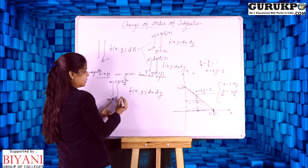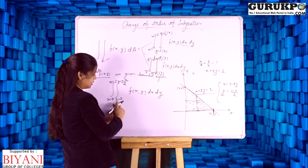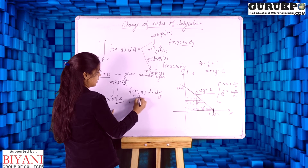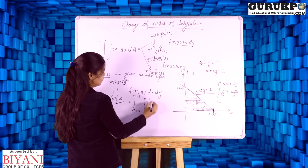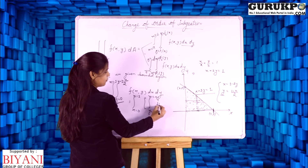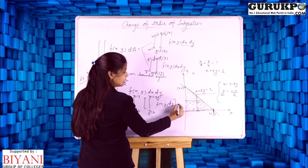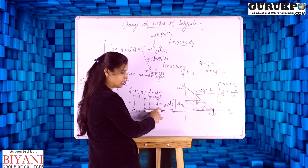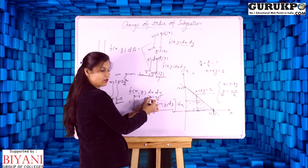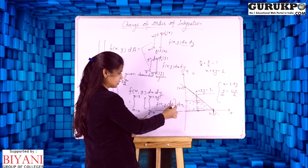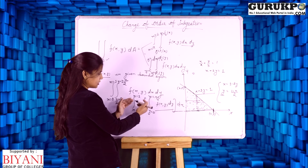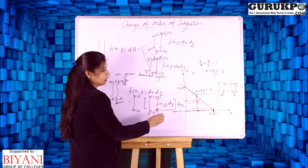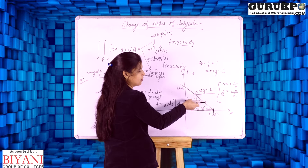When we solve this, we first integrate with respect to y from y = 0 to y = 1 − x/2 of f(x,y) dy dx. When integrating about y, we take x as constant, then we integrate about x. But sometimes this is very difficult to solve, so we change the order of integration, and our vertical strip becomes a horizontal strip.